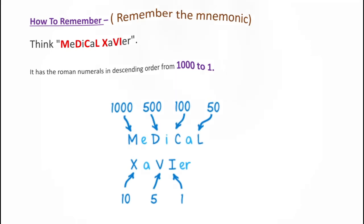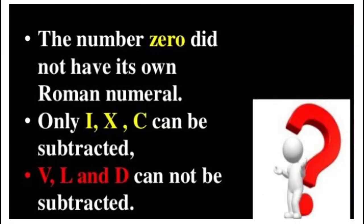Some more rules to keep in mind while forming Roman numerals: first, the number 0 does not have its own Roman numeral. Second, only I, X, and C can be subtracted — V, L, and D cannot be subtracted.